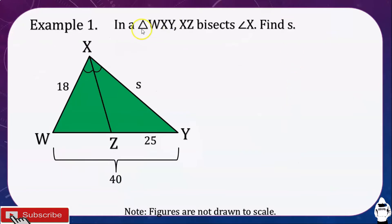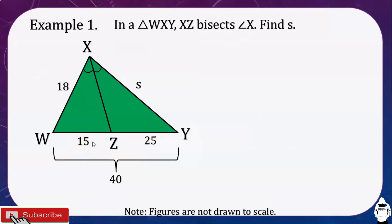Let's have an example. In triangle WXY, XZ bisects angle X — find S. To find the value of S, we first need to find side WZ. Since WY is 40 and ZY is 25, XY is S, and XW is 18. So WZ equals 40 minus 25, which is 15. Now we can set up the proportion: WZ over ZY is equal to WX over XY.